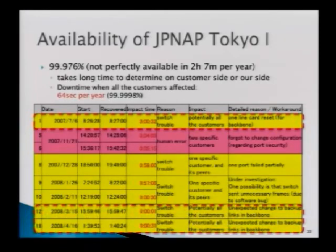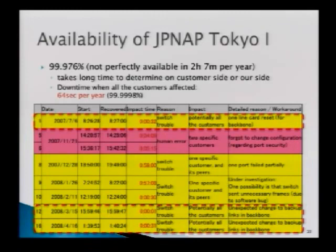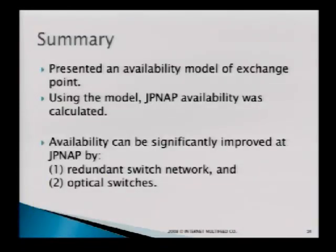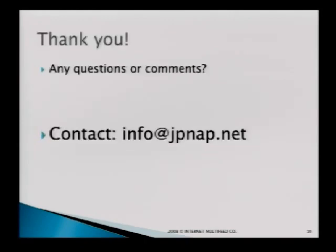Looking at the impact on the backbone network of our switches: the failure time was approximately 64 seconds per year, so almost all customers could use our network all the time — giving availability of 99.9998%. To summarize: I presented a very simple but strict availability model for an exchange point, and using that model together with redundant network and optical switches, JPNAP achieves very high availability. Thank you very much.